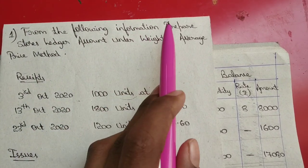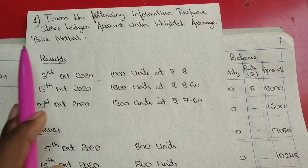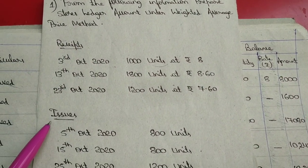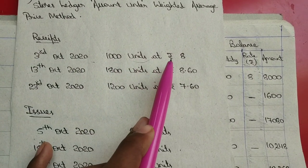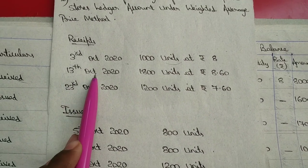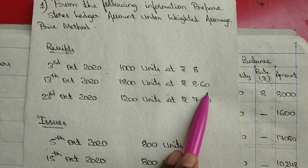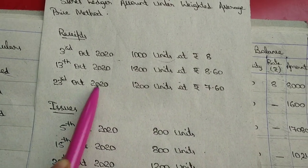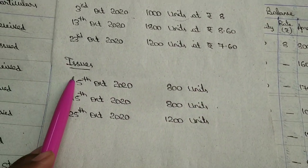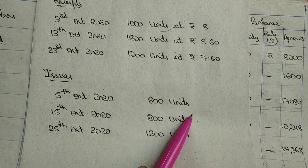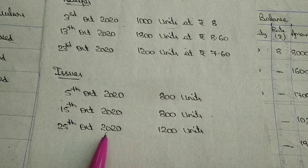From the following information, prepare a stores ledger account under the weighted average price method. Receipts: 3rd October 2020 — 1000 units at Rs.8; 13th October 2020 — 1800 units at Rs.8.60; 23rd October 2020 — 1200 units at Rs.7.60. Issues: 5th October 2020 — 800 units; 15th October 2020 — 800 units; 25th October 2020.